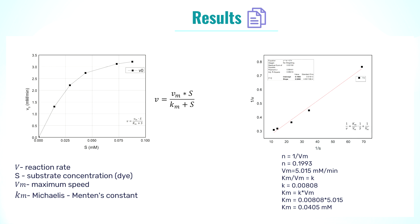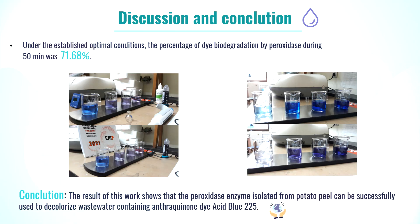The first graph shows the velocity of the enzyme, and by linearization of it, the Michaelis-Menten constant was calculated to be 0.0405 millimolars. Under the established optimal conditions, the percentage of biodegradation by peroxidase enzyme during 15 minutes was 71.68%. This result shows that the peroxidase enzyme isolated from potato peel can be successfully used to decolorize wastewater containing anthraquinone dye Acid Blue 225. Thank you for your attention.